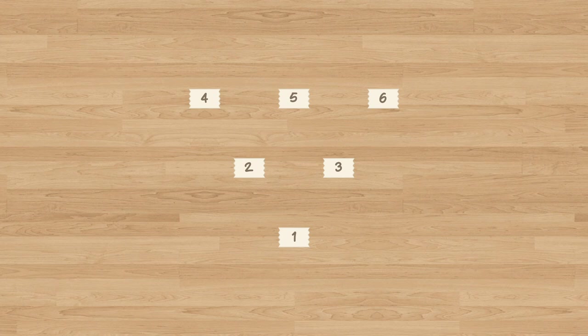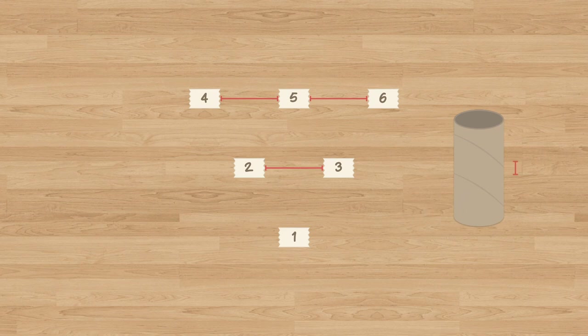For our challenge level later on, we're going to want to make sure that the markers are set up in a standard kind of way. So we're going to use an empty roll of toilet paper to make sure that the distance is right. There should be one roll of toilet paper between each marker in a row and there should be two rolls of toilet paper between the first and fifth marker.